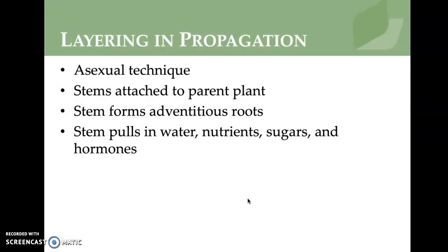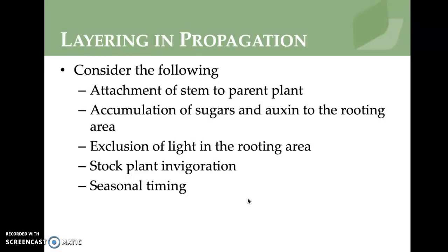With layering and propagation, it's an asexual technique where stems attached to the parent plant form adventitious roots, then pull in water, nutrients, sugars, and hormones. You have to consider: attachment of stem to parent plant, accumulation of sugars and auxin to the rooting area, exclusion of light in the rooting area, and stock plant invigoration and seasonal timing. The practice of layering is most successful when all these elements are considered.